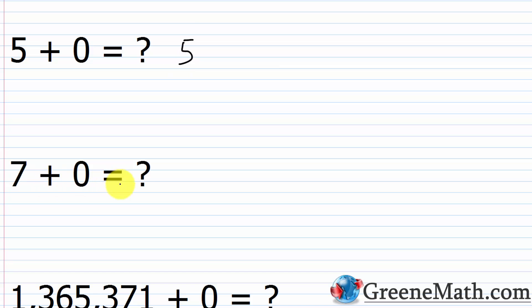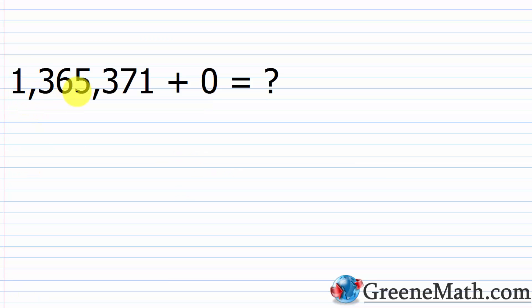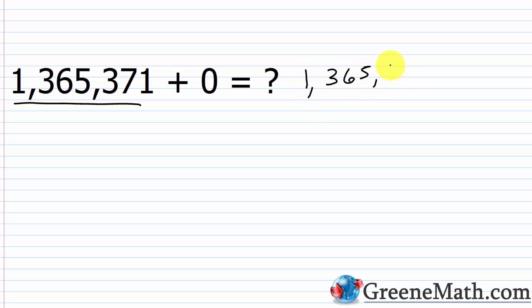Seven plus zero equals seven — adding zero to seven leaves seven unchanged. And one million, three hundred sixty-five thousand, three hundred seventy-one plus zero equals that same number, because adding zero to anything leaves it unchanged.